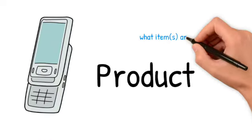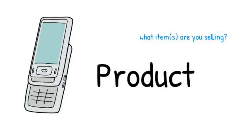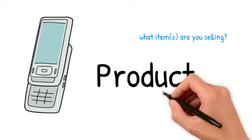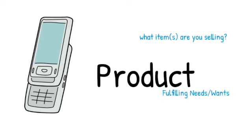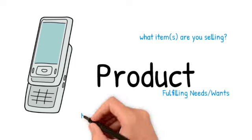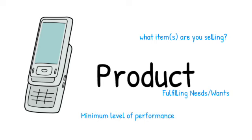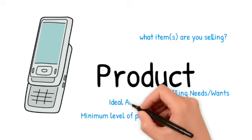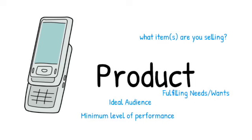Now let's start with product. In layman's language, product is an item that is offered for sale. This can be physical or this can be virtual. The most important thing is that a product should always be fulfilling the needs and demands of a customer. Our product should make sense to our target market, and its minimum level of performance means that a product should be made with the least amount of effort, but we should be able to get customer feedback so that we can add more resources. This should always be targeted to an ideal audience so that we are not wasting everything we have developed into a non-fruitful segment of customers.